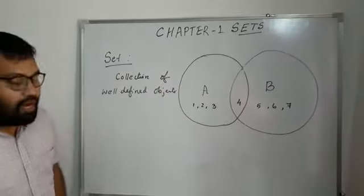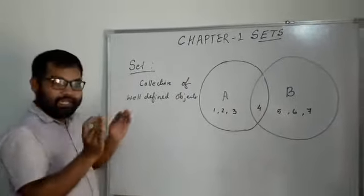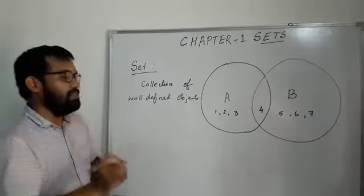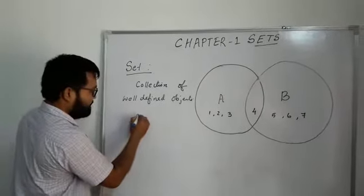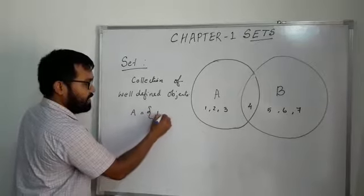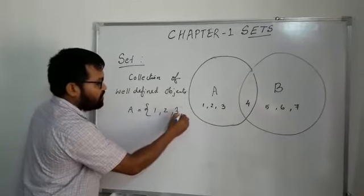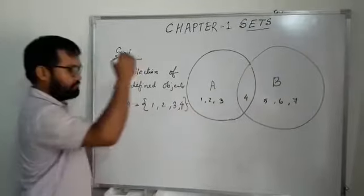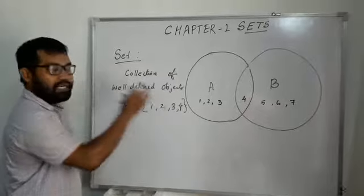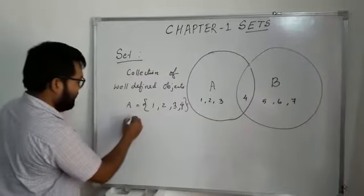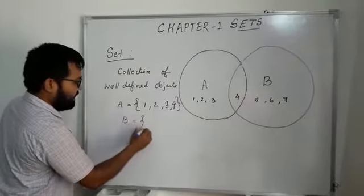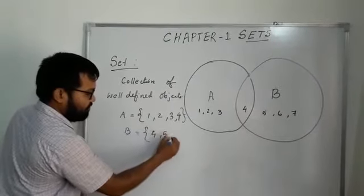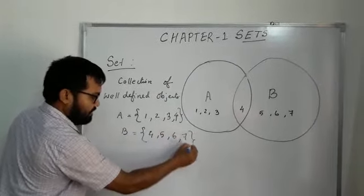So when you say well-defined, it means any group that has a particular similarity. For example, let's say set A contains one, two, three, four - these are the first four natural numbers. Set B contains four, five, six, seven.